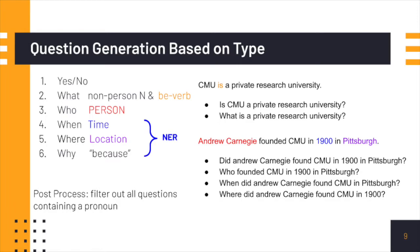Grammar transformation ensures the grammatical correctness of a question. How do we know what type of questions we want to generate? For any sentence, we ask if it is qualified by any of the six types of questions. Every sentence is qualified for a yes-no question. Sentences that contain a non-person noun as a subject and a be-verb are qualified for a what question. If NER tells us the subject is a person type, we can ask a who question. If we find time or location expressions in NER, we can use the dependency tree to check if the expression is part of a prepositional phrase describing the root verb — if so, we apply grammar transformation to ask a when or where question. We ask a why question if there is a keyword 'because' in the sentence; we ask about what's before 'because', and the expected answer is what's after 'because'. We skipped five types of questions if the sentence has a pronoun subject due to problems applying co-reference resolution.